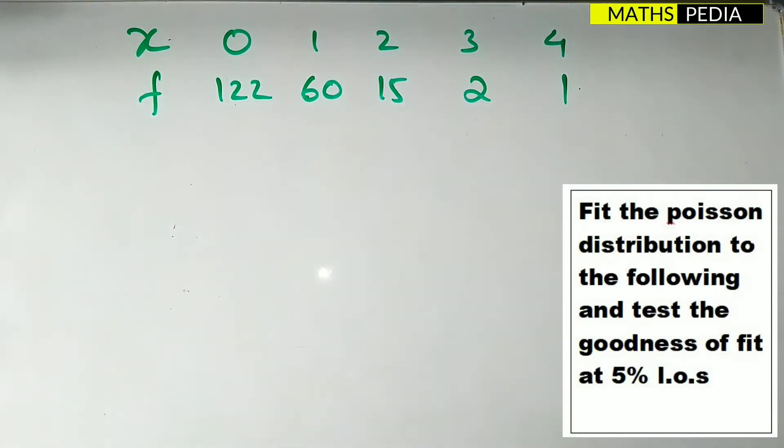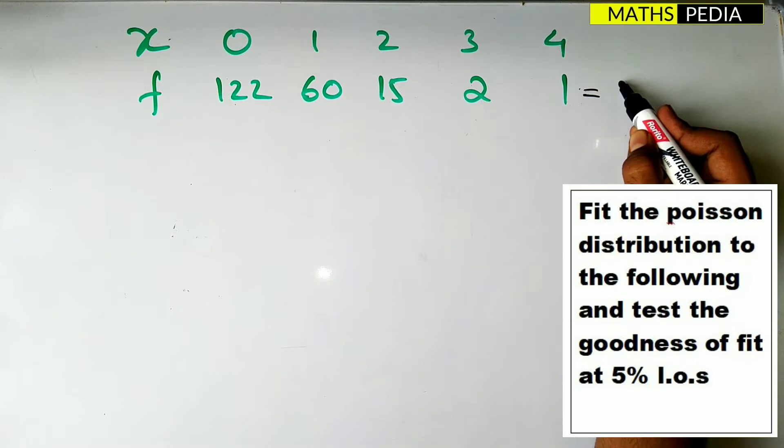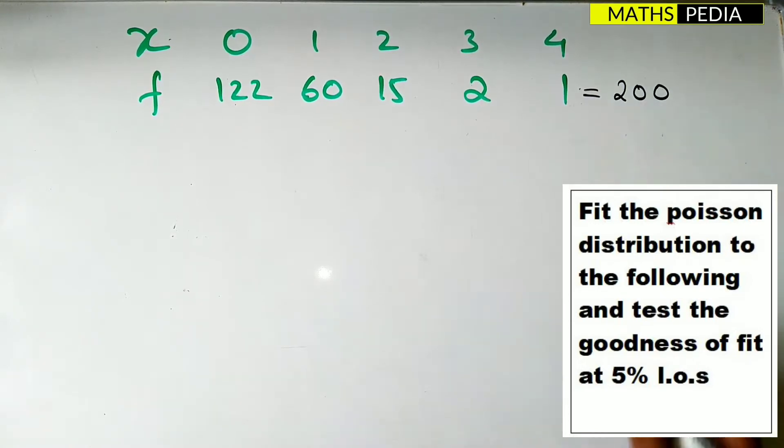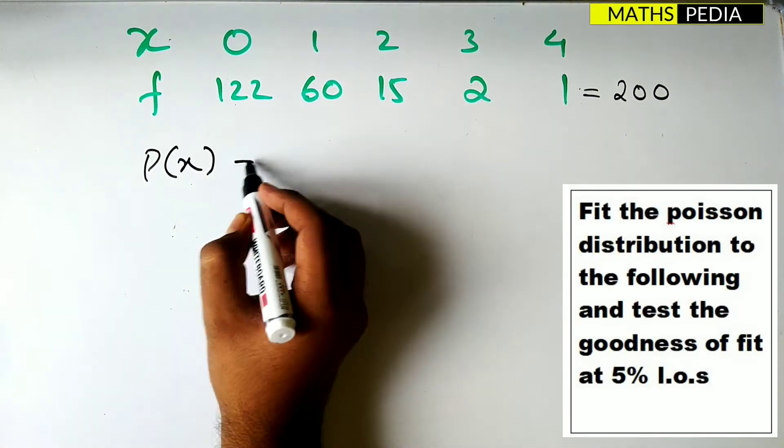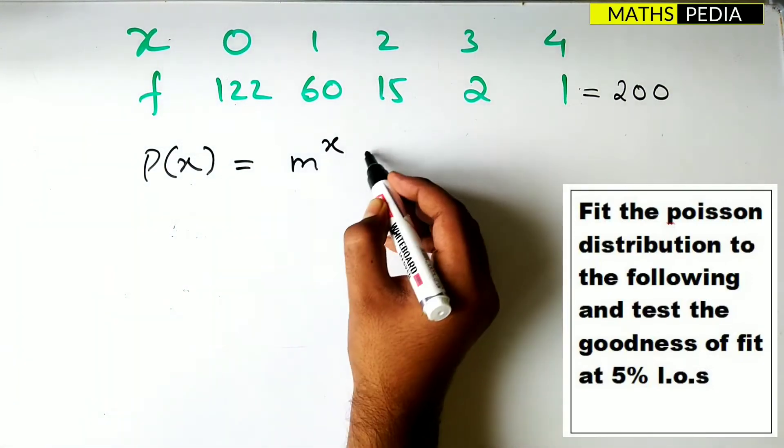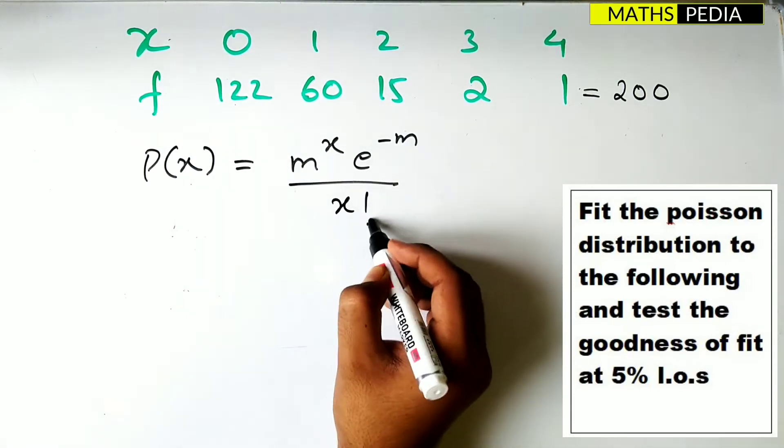Therefore we have to find some sort of relation. So first of all we will find the summation of f. What is that? It is equal to 200. Summation of f is 200. And Poisson distribution I hope you know. P of x formula. What is the formula? m power x into e power minus m by x factorial.